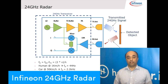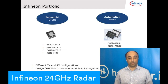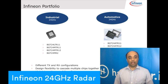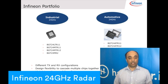With Doppler radar, you can get the speed and the direction of motion — whether it moves toward the radar or away from the radar. Infineon has a broad portfolio for 24 GHz radar. We cover both industrial and automotive space with our 24 GHz solutions.